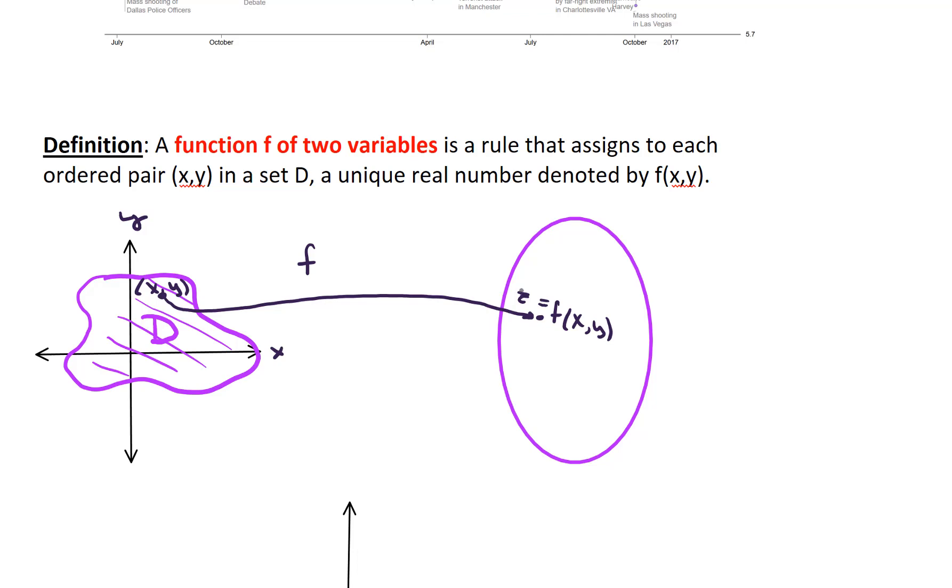So this is your domain. The domain is now a subset of R2. And over here is your codomain. This is some sort of subset of the real numbers. And this is a subset of, as I said, R2 or the Cartesian plane.